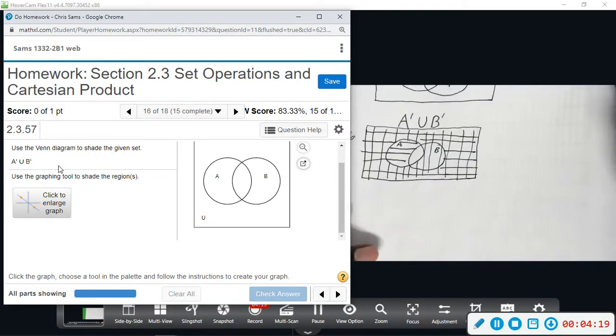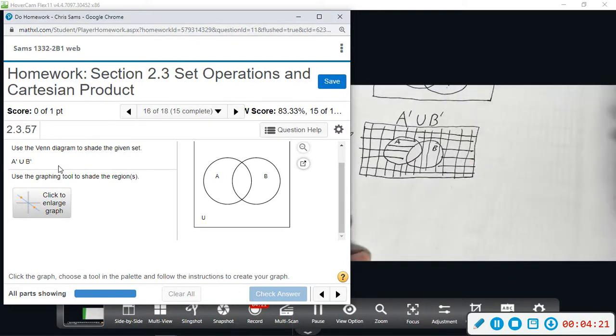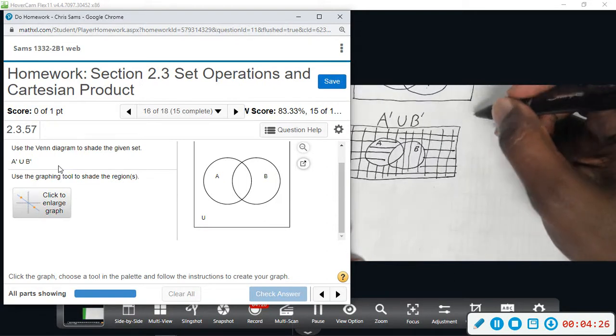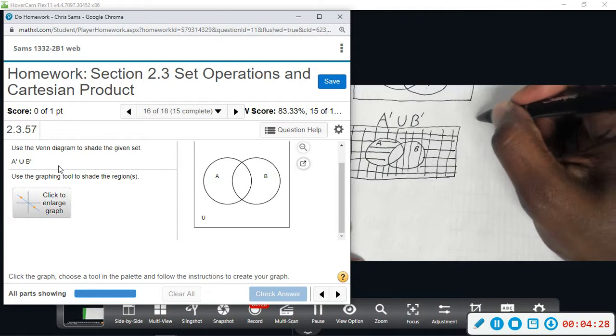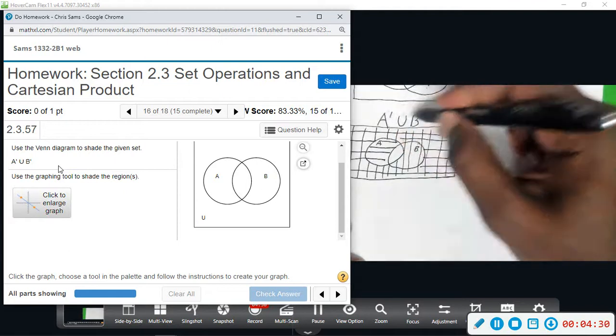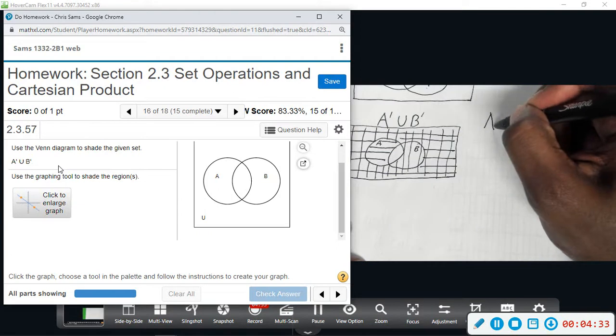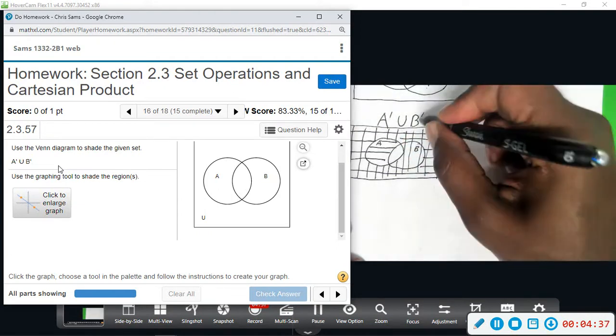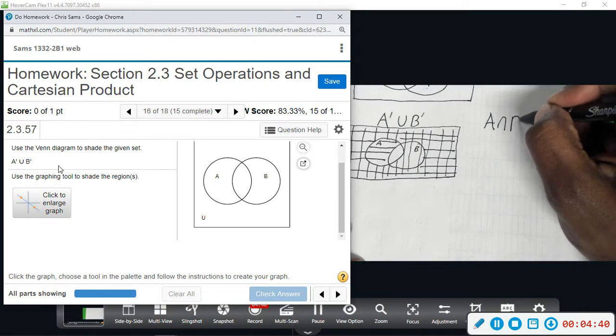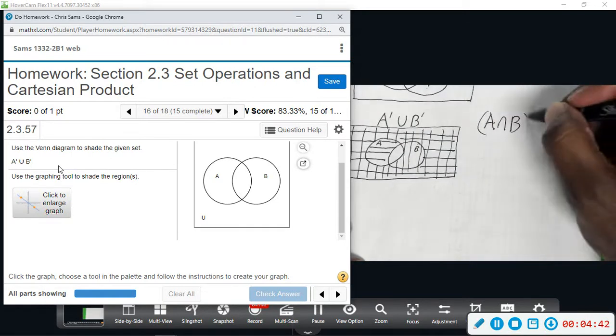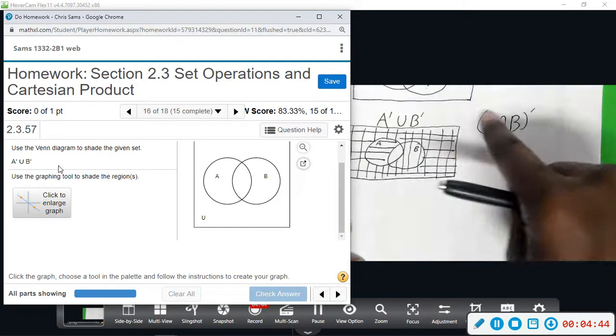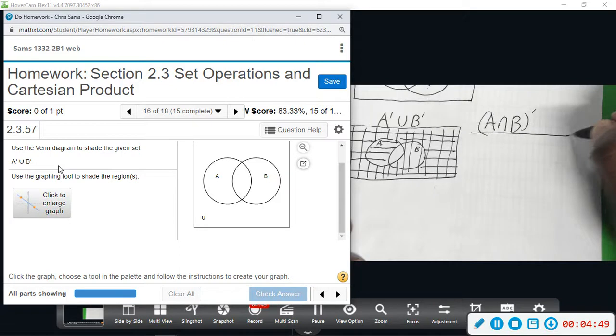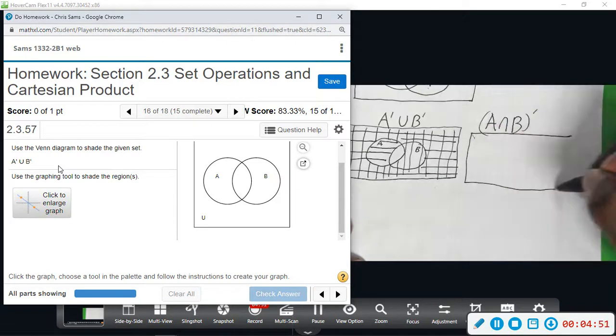Now, De Morgan's laws do a distributive property and it follows like this. It's like dividing out a negative one and so it will look like A and then this sign gets flipped, intersect, and then B, and then that complement will be on the outside. So you pretty much just take negative from all the terms and put it on the outside and this will be a cleaner picture for you to see the shading.